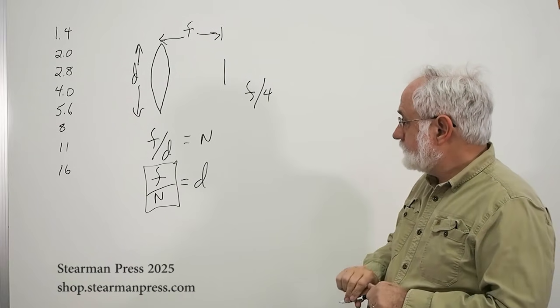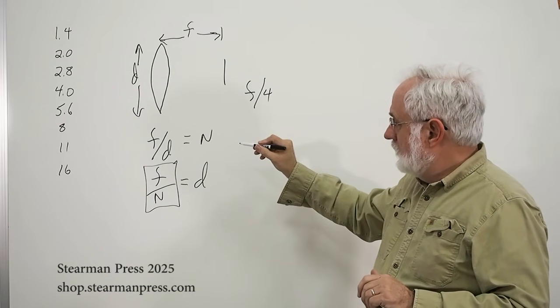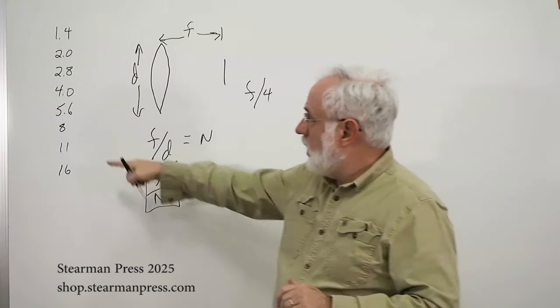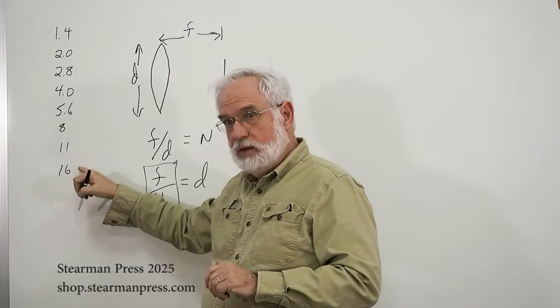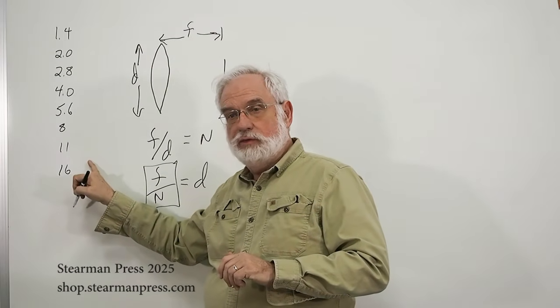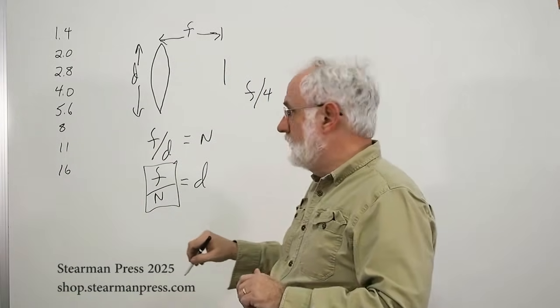Now, it also explains why these numbers appear to be inverted, why is an f16 setting smaller than, say, an f8?